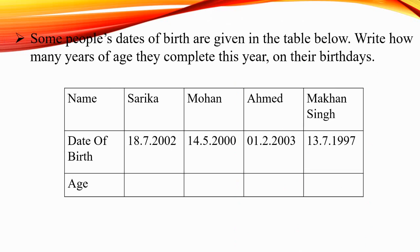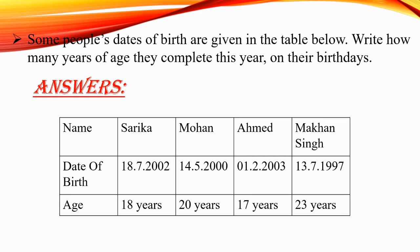Next activity, students. Some people's dates of birth are given in the table below. Write how many years of age they complete this year on their birthdays — like Sarika, Mohan, Hamad, and Makhan Singh. You have to calculate their age and write it. Here is the answer for the second activity — you don't have to copy it, just check whether you have written it right. Correct your answer, understand it properly, and post it in your group. Draw the box, columns and everything neat and clean. Complete it, take a pic and post it in your school WhatsApp group.